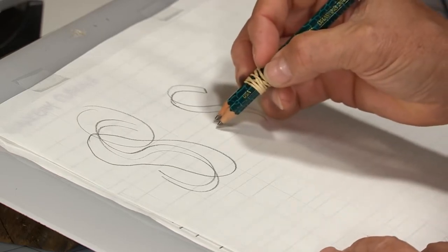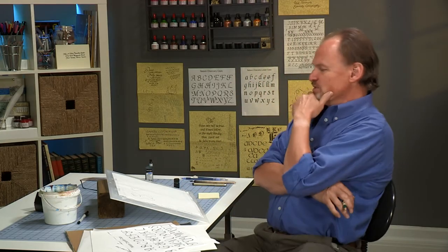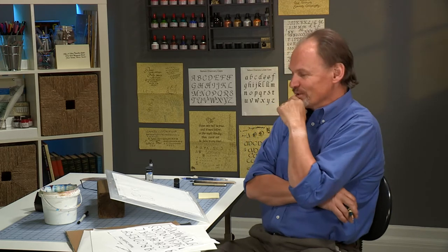And then the bottom curve. Now here's where it gets a little bit tricky, because so far so good, but one of the things we don't want to do—ask Mr. Arrighi, the Irish monk who is the grandfather of chancery cursive—we don't want the s to be symmetrical.